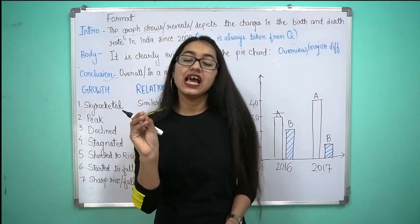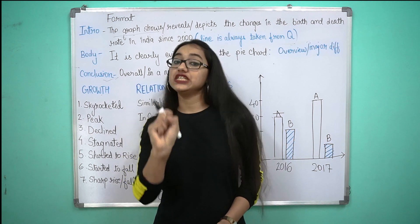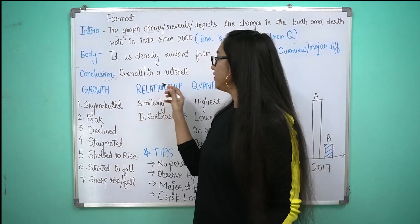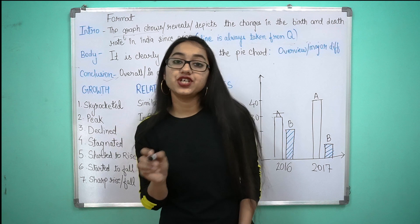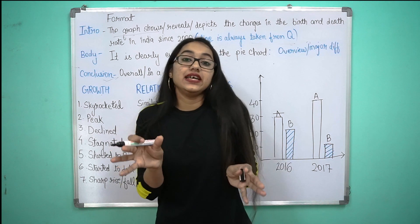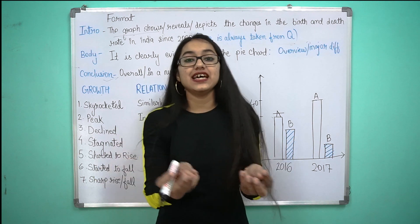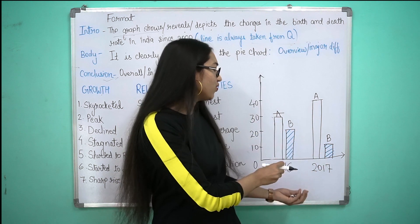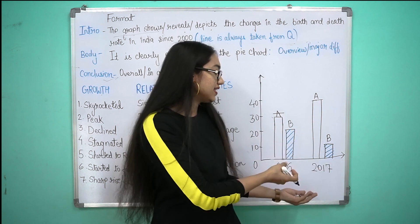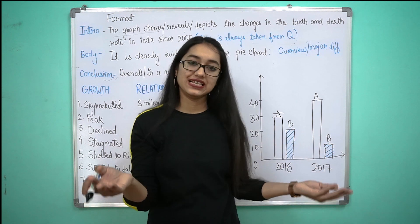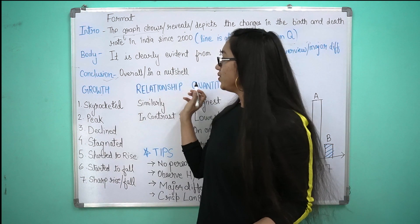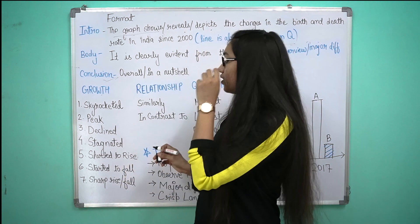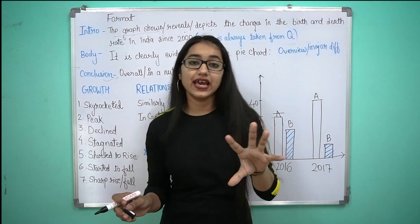Next is conclusion. Conclusion भी similar ही होता है introduction के, लेकिन हम थोड़े से words यहाँ पे change कर देते हैं। यहाँ पे हम use करते हैं 'overall' या फिर 'in a nutshell' — मतलब मोटामाटी हम कह सकते हैं कि ऐसा ऐसा है। तो हम बोलेंगे कि दिल्ली के लोगों को product A ज़्यादा अच्छा लगता है as compared to product B। तो यह proper format हो जाता है।